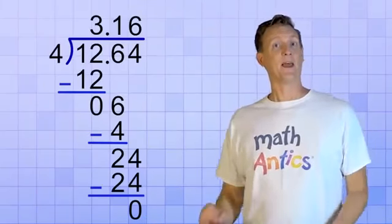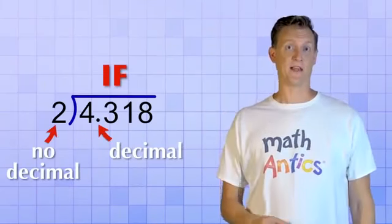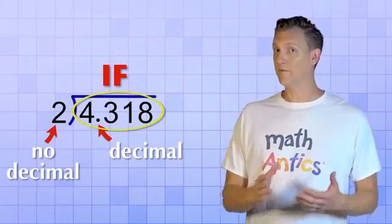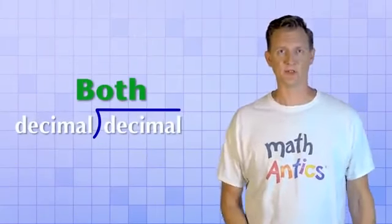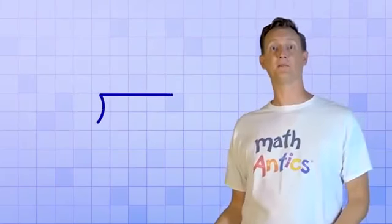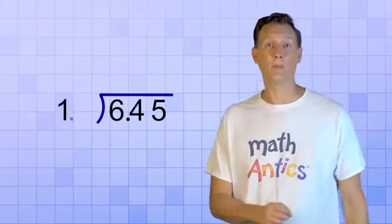That's all there is to it if it's only the dividend that's a decimal number. But what if both the divisor and the dividend are decimals? Like, what if you have to divide 6.45 by 1.5?